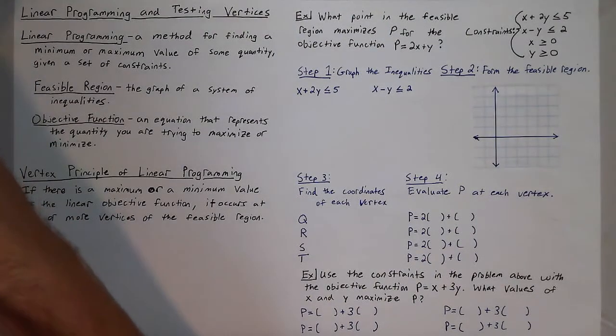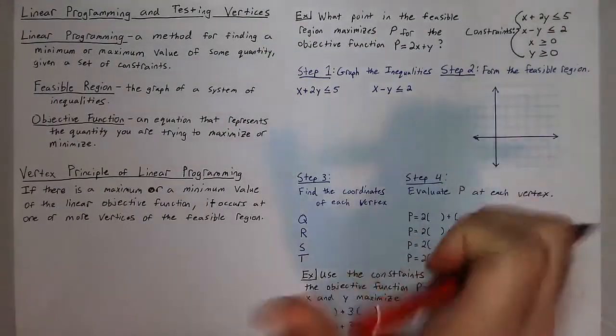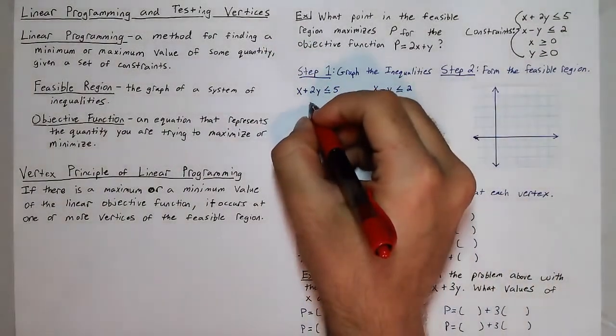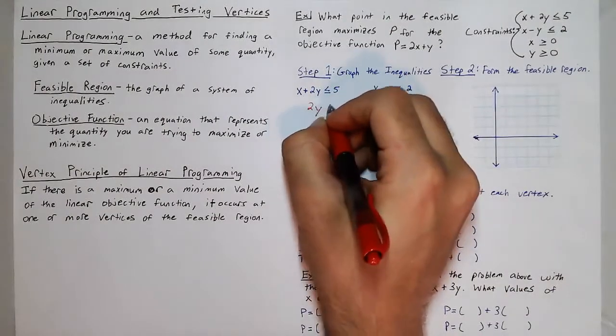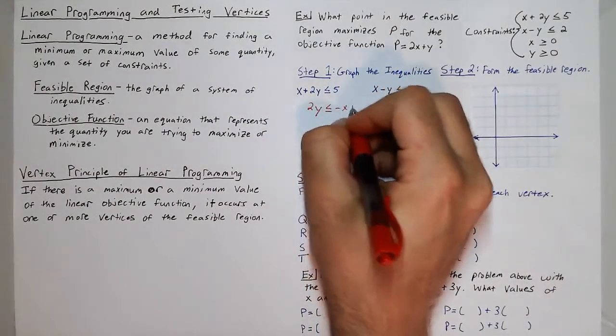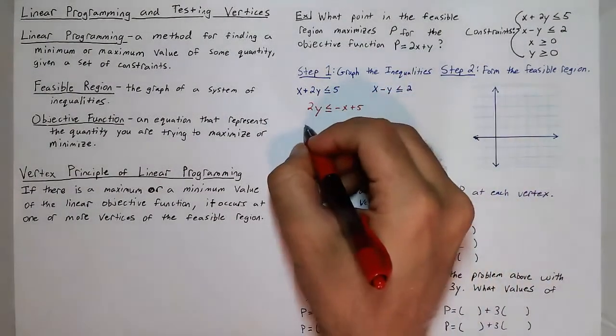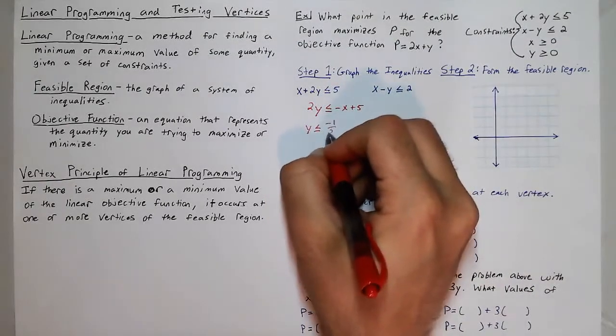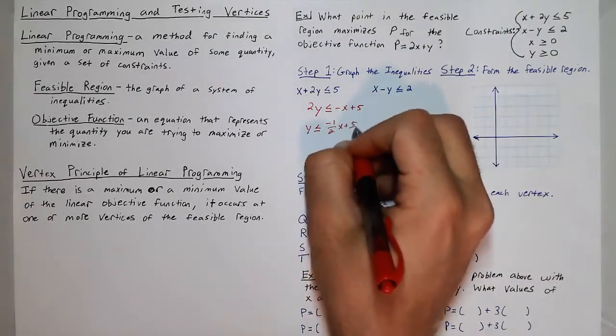Now first, we just need to graph the inequalities, which forces us to put these into slope intercept form. So solving both these equations for y, we get 2y is less than or equal to negative x plus 5. Divided by 2, we get y is less than or equal to negative 1 half x plus 5 halves.